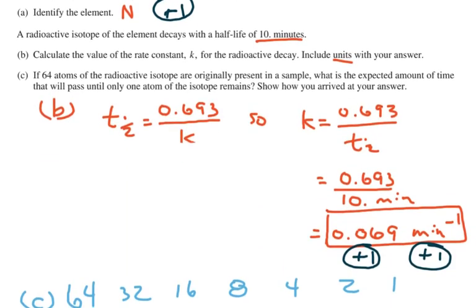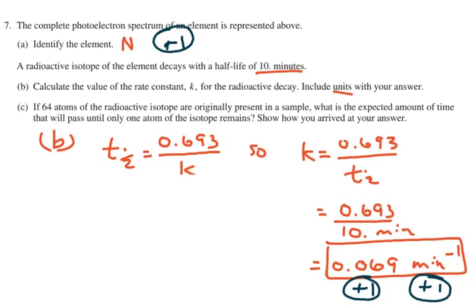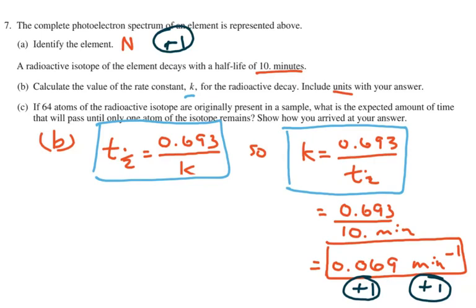So if we go back and look on the formula sheet, we're going to find a formula that the half-life is equal to 0.693 divided by K, which is the constant. And that 0.693 is actually the natural log of 2. We can move this around so that we have it solved in terms of K. So K is equal to 0.693 divided by the half-life.